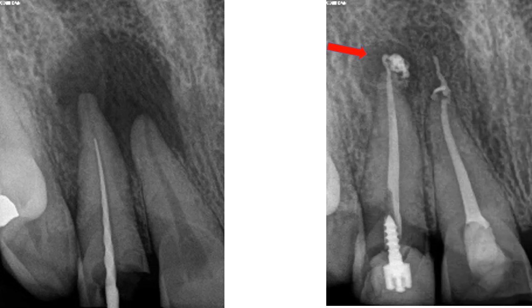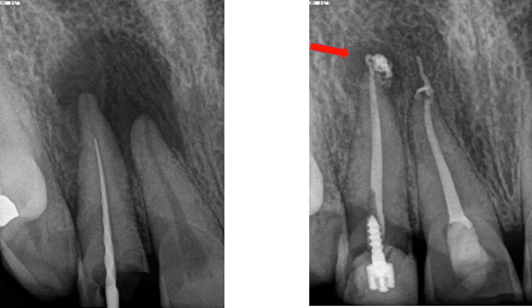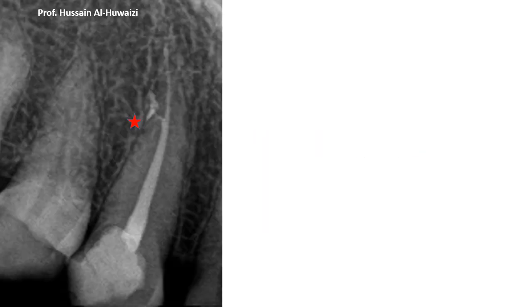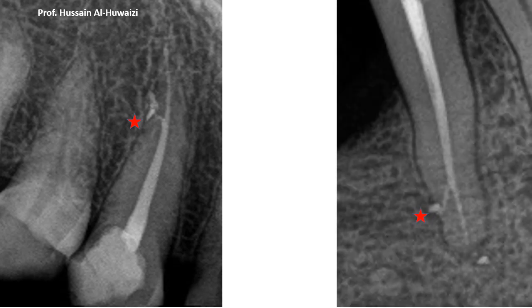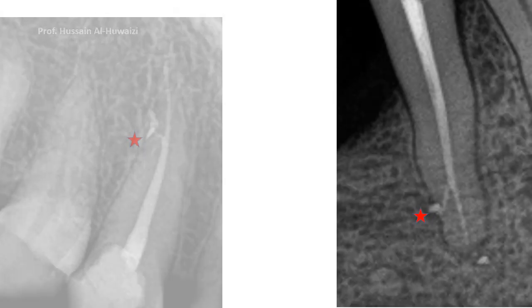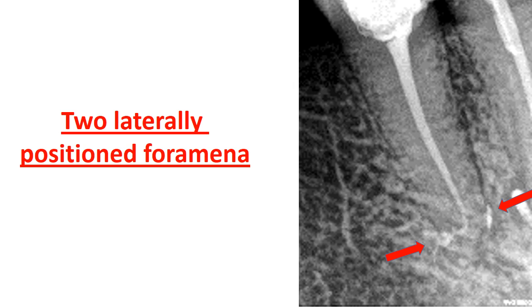After obturation with slight sealer extrusion, there is good healing and the lateral canals are filled. Cases with two laterally positioned foramina can only be obturated by Thermafil with soft gutta-percha.